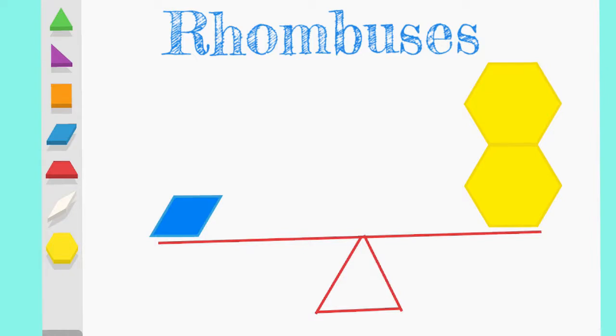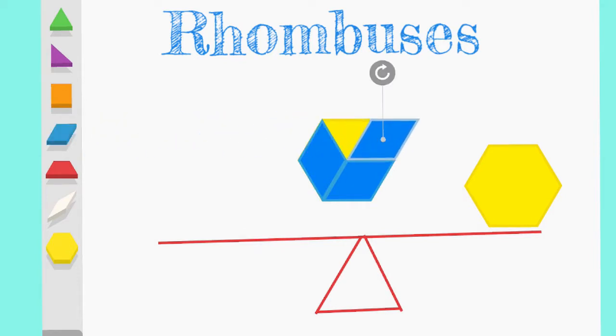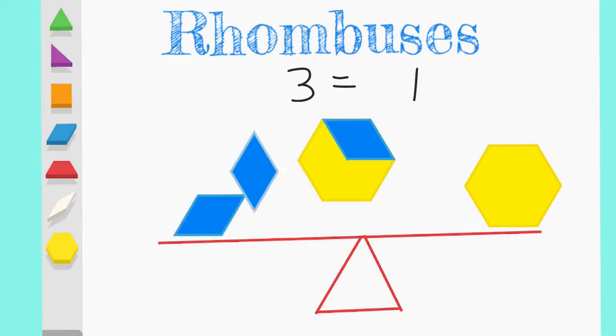Okay, just like before, we are going to see how many rhombuses will fit inside a hexagon first. So I see there's one. Oh, I'm going to need to turn this around. Two and get another one. Turn it. Does it fit? Three. Okay, three rhombuses equals one hexagon.